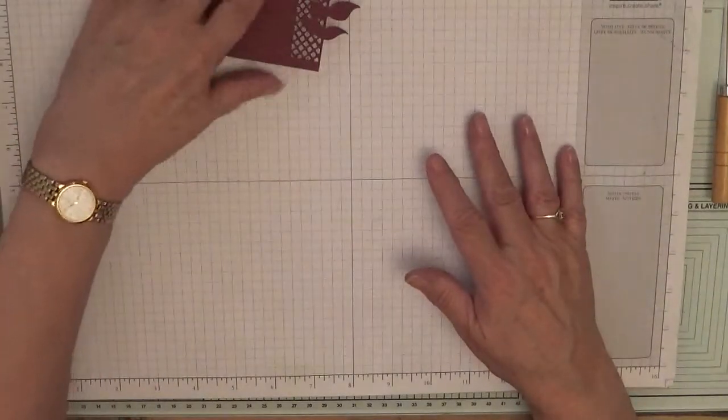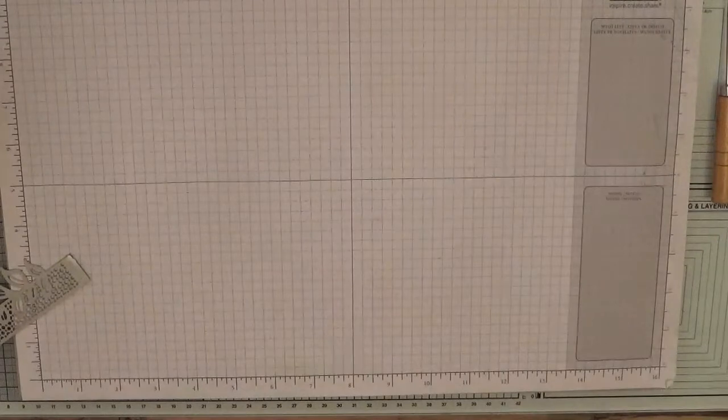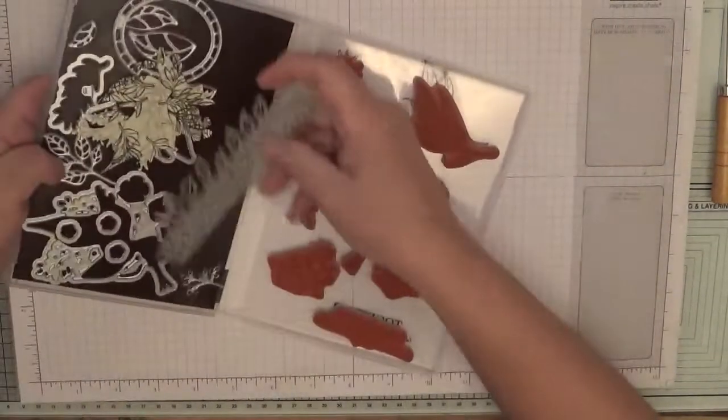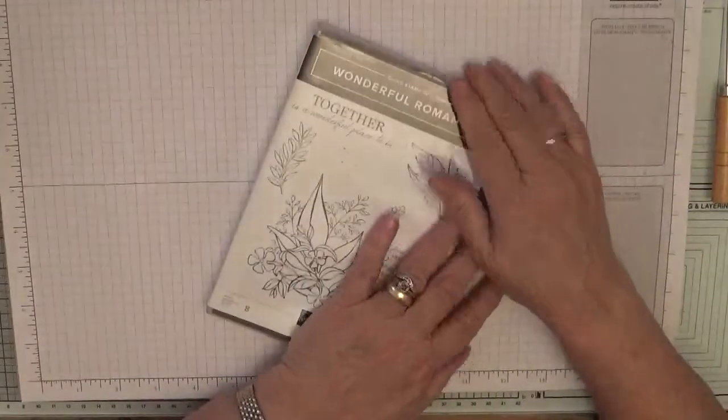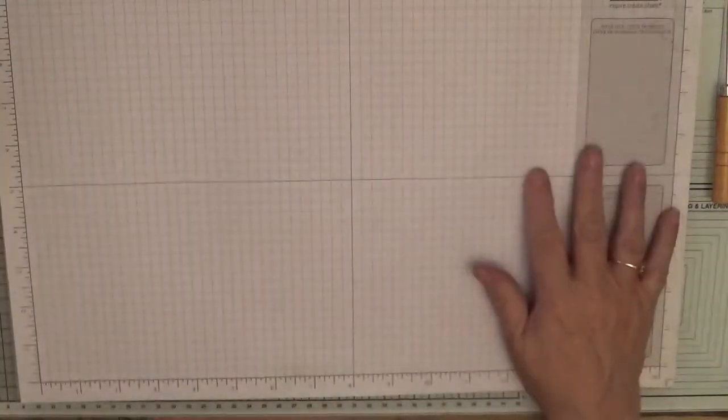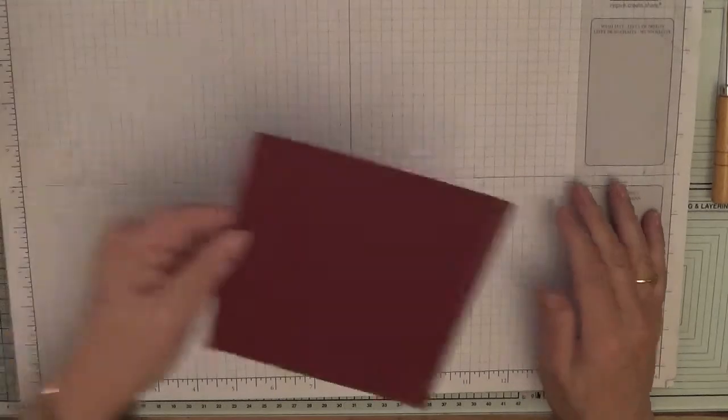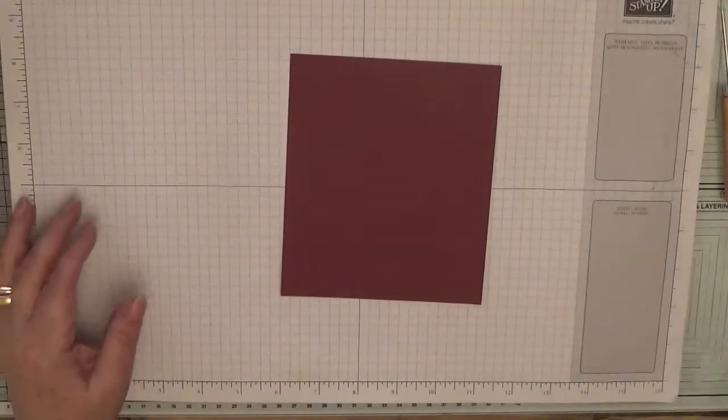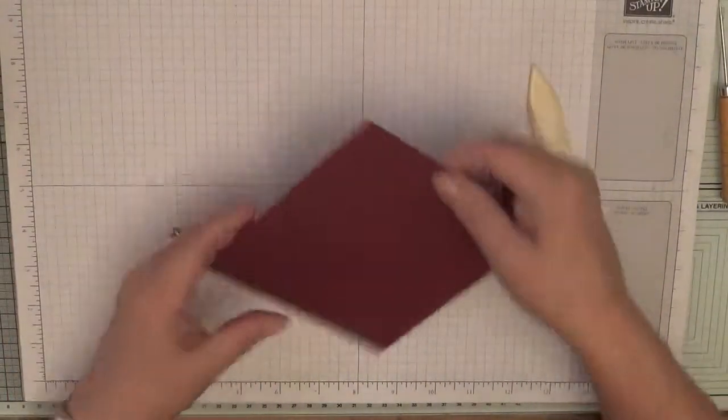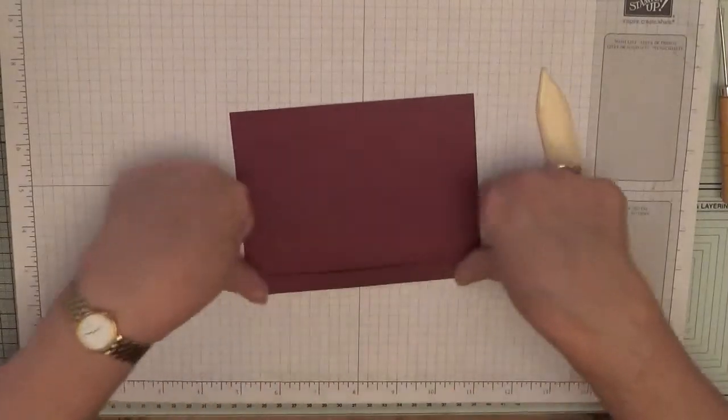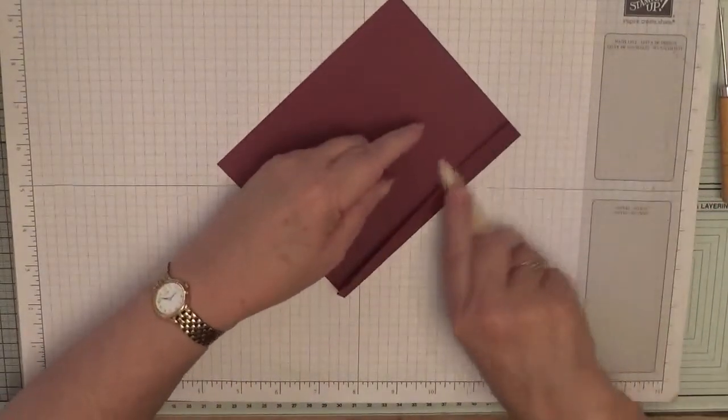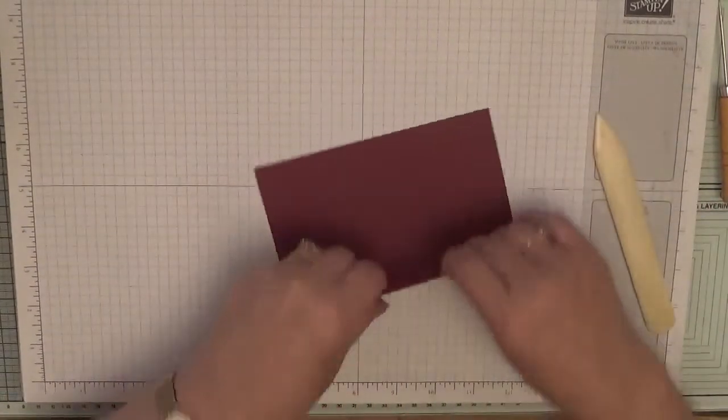Keep that to one side now, put this die away so it won't get lost. With our bone folder we're going to fold and burnish all our score lines.